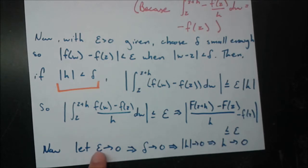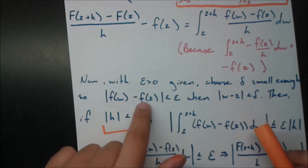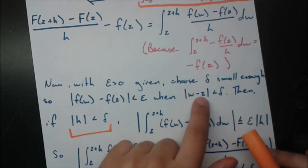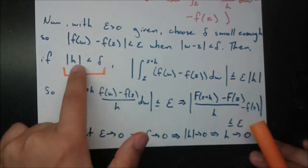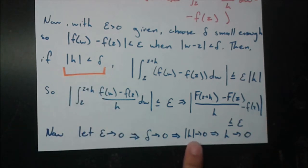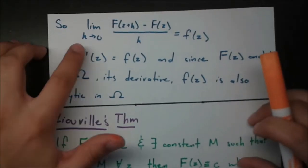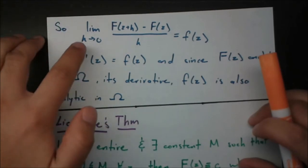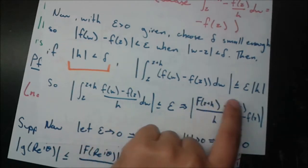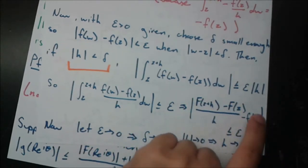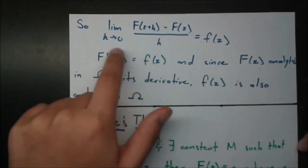The last step is to let epsilon approach zero. As epsilon approaches zero, this condition gets tighter: w must get closer and closer to z, so delta approaches zero. Since |h| < delta, and delta approaches zero, |h| must also approach zero, so h approaches zero. Then the limit as h→0 of [F(z+h) - F(z)]/h equals f(z). This is just the definition of the derivative: big F'(z) equals small f(z).